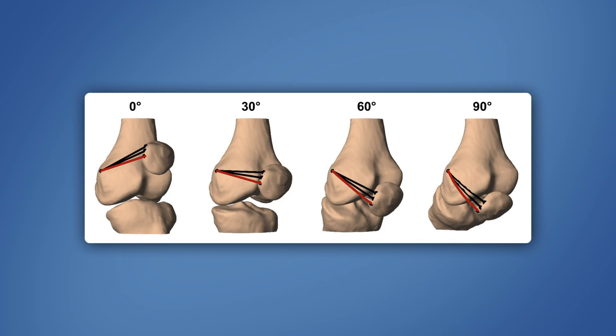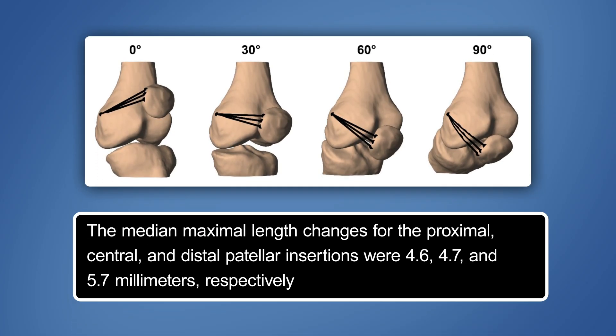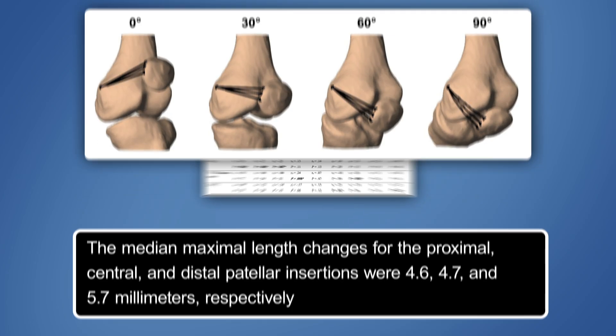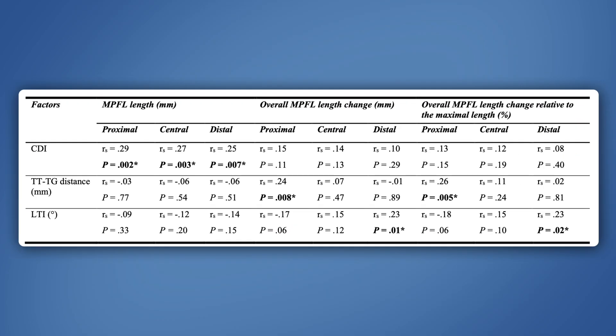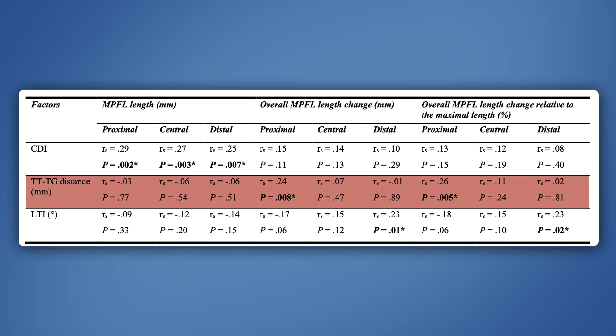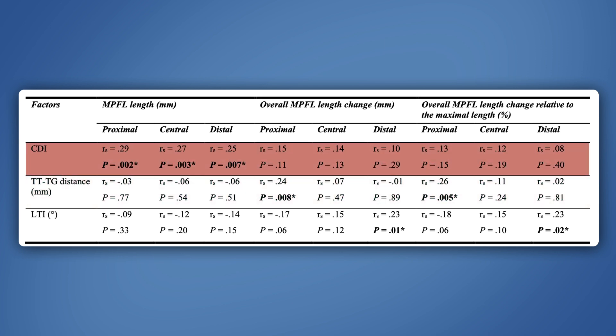but increased at deeper flexion angles. The median maximal length changes for the proximal, central, and distal patellar insertions were 4.6, 4.7, and 5.7 millimeters, respectively. However, these values correlated only weakly, or not at all, with the tibial tuberosity trochlear groove distance, the Caton-Deschamps index,